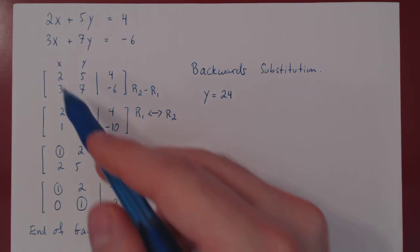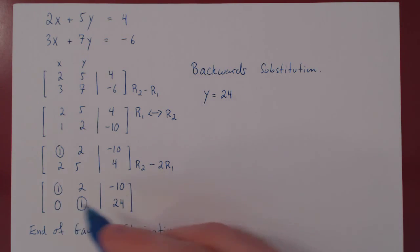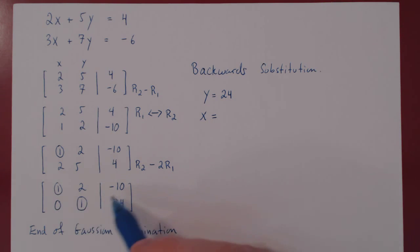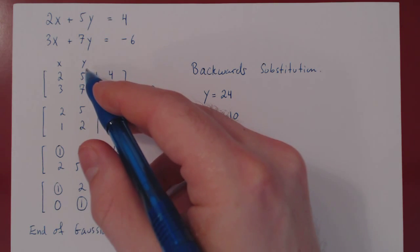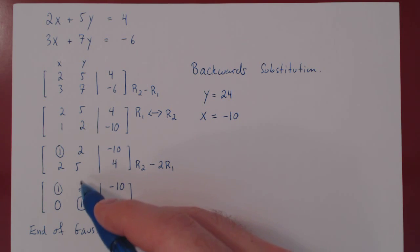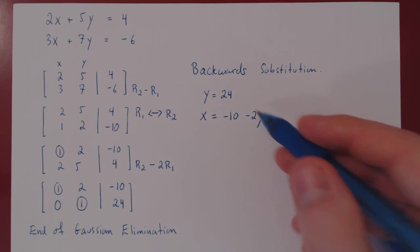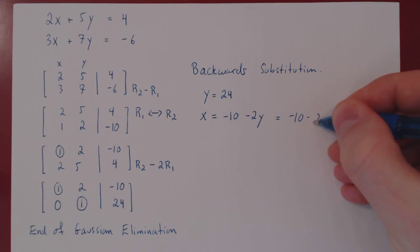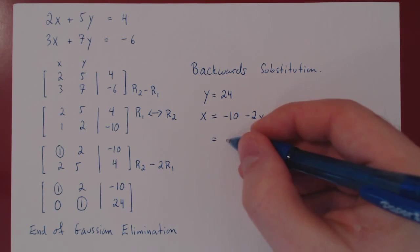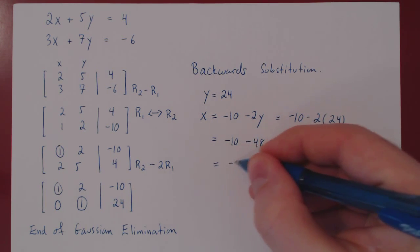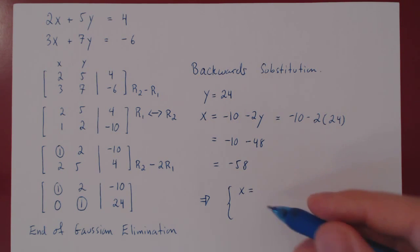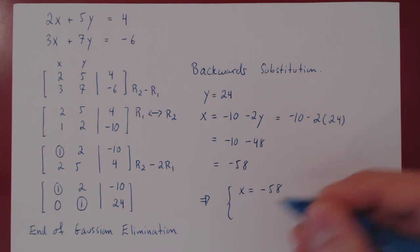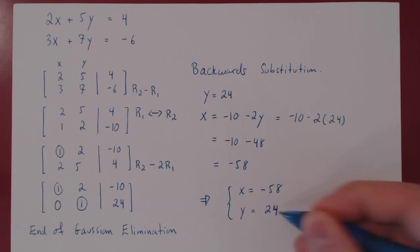So we have now solved for y. To solve for x, we use the corresponding leading one and move up one row. The equality, which we will solve in our head, gives us x equals negative ten. But on the left-hand side there is a positive 2y. To isolate x, we must send the 2y to the other side, where positive 2y becomes negative 2y. We know the value of y is 24, so we get negative ten minus two times 24, which is negative ten minus 48. So x is negative 58. This is the end of our solution: we have a unique solution where x equals negative 58 and y equals positive 24.